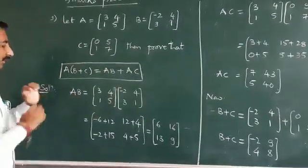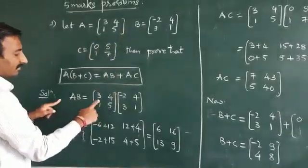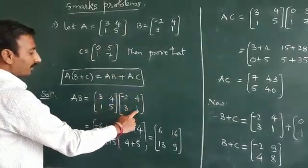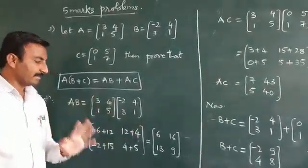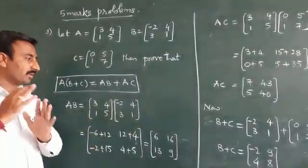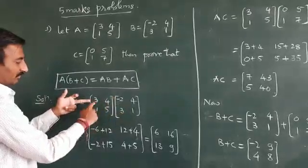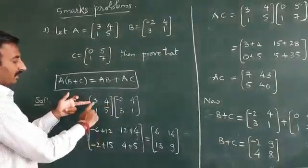Now let us go with A into B. AB, you know that, first I write A and B matrices here, that is [3, 4; 1, 5] and [-2, 4; 3, 1]. Here both orders are same, there is no question to check whether multiplication is possible or not. So take the first row and the first column: 3 into -2 is -6, 4 into 3 is 12.